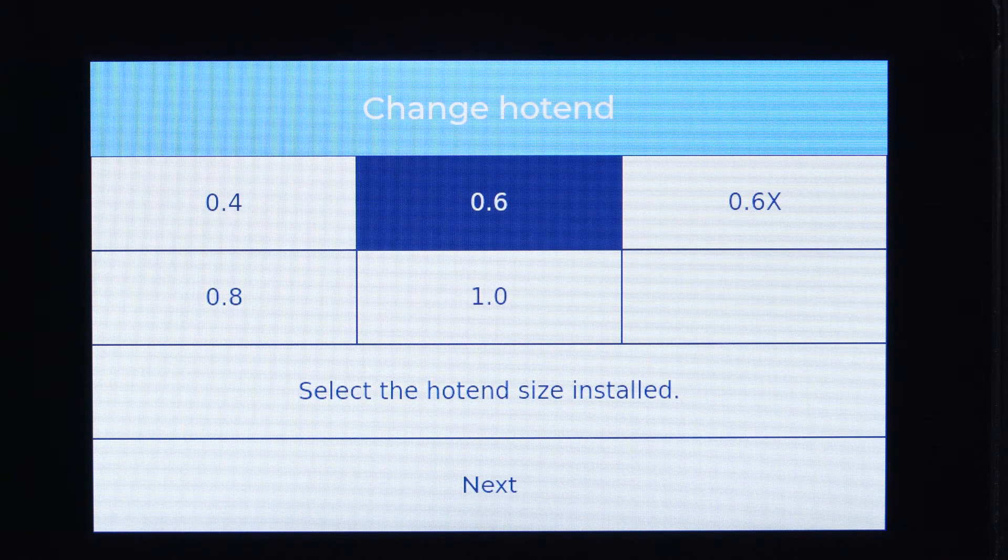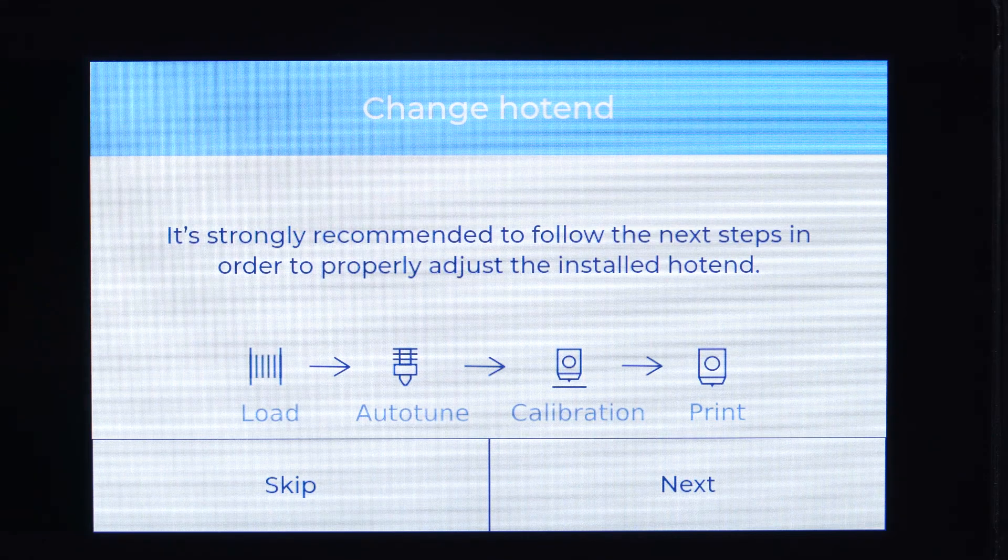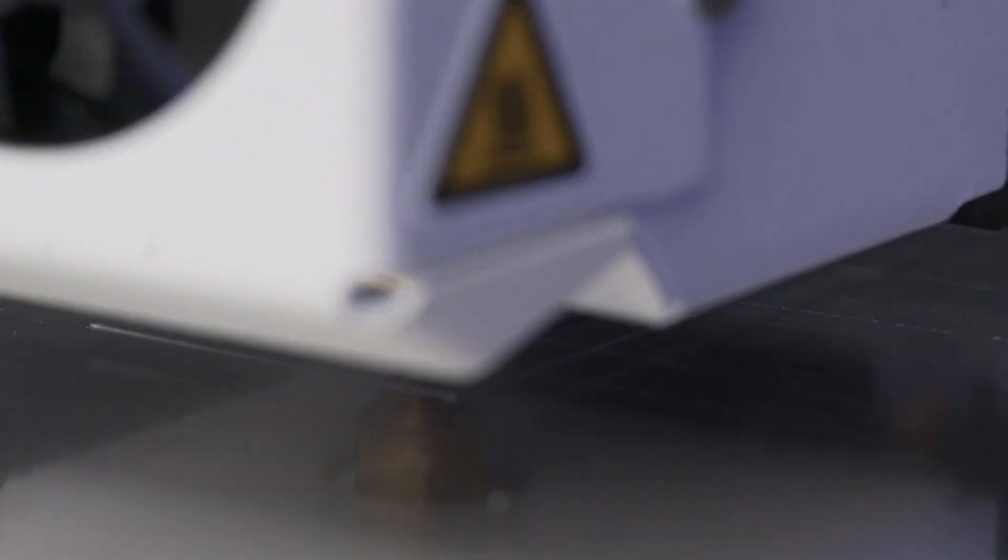After changing the hotend, it is essential to perform an auto-tune to adjust the parameters controlling its temperature. It's also essential to execute the calibration assistant after changing the hotend to ensure the hotend is installed correctly.